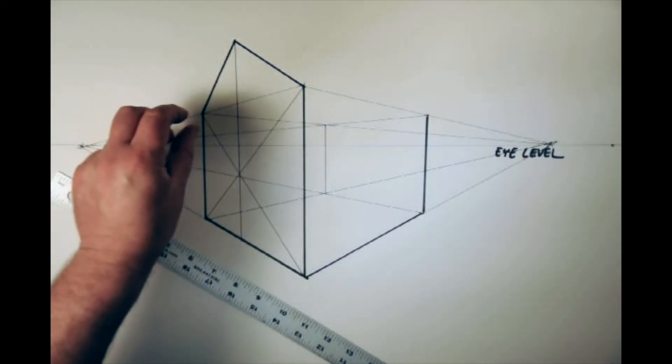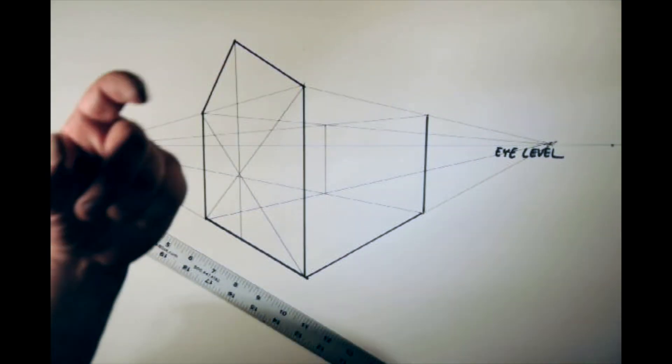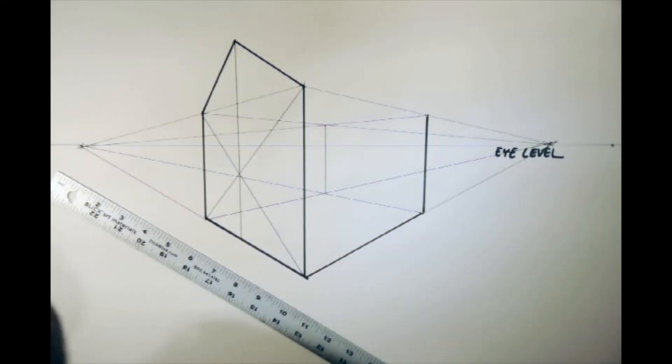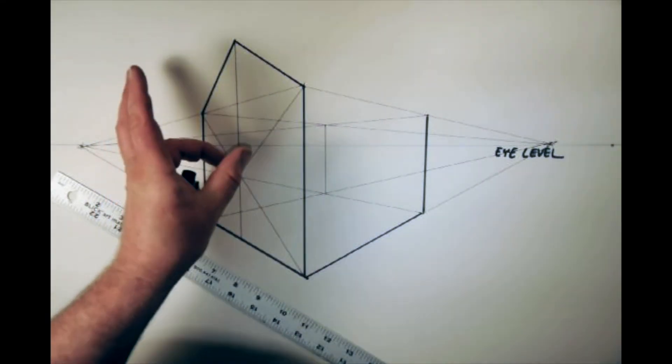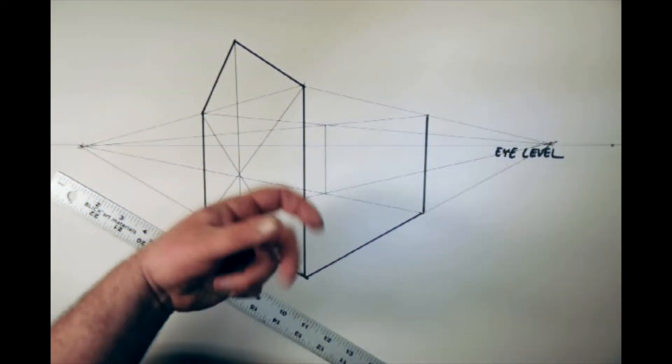Now later you can get fancy and you can add a roof and an awning and shingles and all that, but I just want to make some simple lines so that you start to get the idea of how to do this.